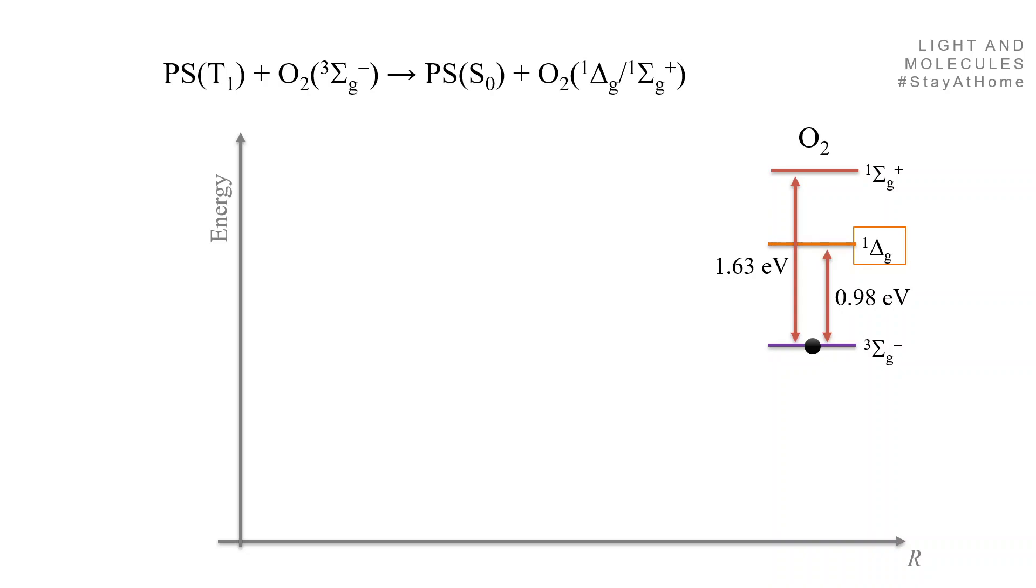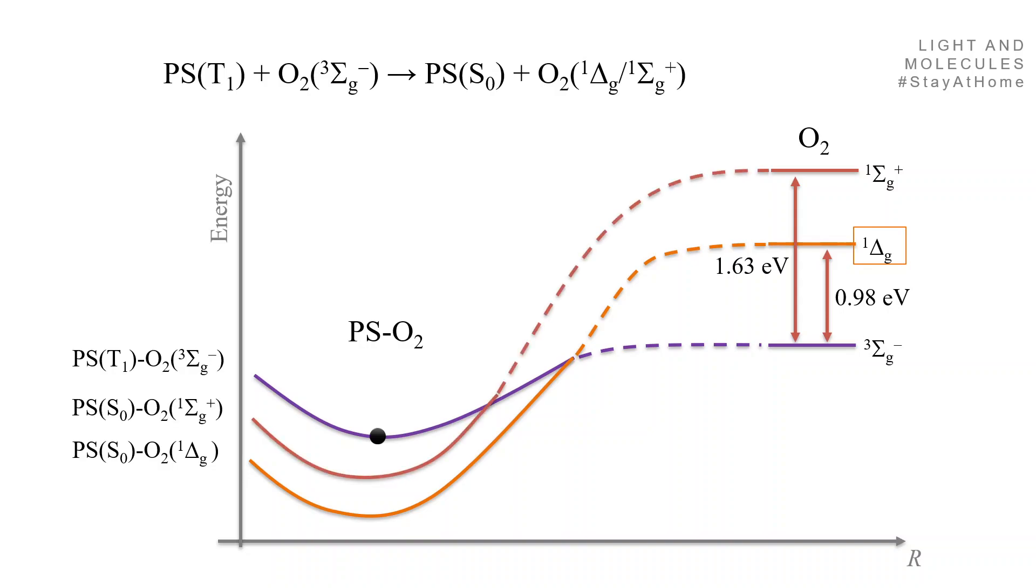When the O2 interacts with the PS to form the complex, the ground state stabilizes and the PS is in the triplet state and the delta state stabilizes even more. The sigma state also stabilizes, and now the oxygen triplet is the highest of the complex and you have two singlet states below.